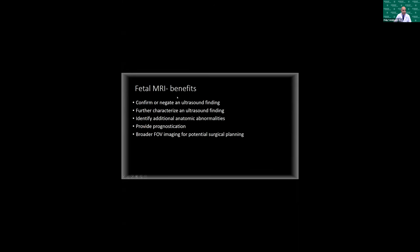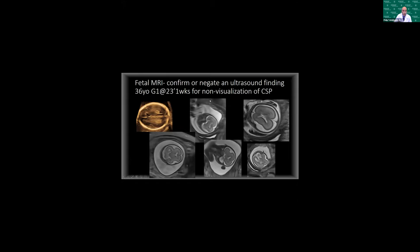The benefits of fetal MRI include confirming or negating an ultrasound finding, further characterizing an ultrasound finding, finding additional abnormalities, providing prognostication, and giving fetal surgeons a broader field of view for surgical planning. Here's a case: a 36-year-old primigravida presenting at 23 weeks for non-visualization of the cavum septum pellucidum. This mom was an absolute trooper — the fetus was moving around constantly. We imaged her for an hour and 10 minutes and were able to get just five diagnostic images that showed the leaflets of the septum pellucidum. This was a normal study, and we were very proud and happy to give mom this good prognosis.